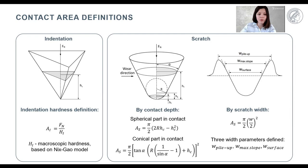This slide presents the contact area definitions used in this study. For the indentation contact area, we use the standard indentation hardness definition based on Oliver and Pharr. For the scratch contact area, we assume a half-circular shape and there are four contact area definitions in total. There is a definition based on the average contact depth, for which there are two expressions depending on whether the spherical or conical part of the tip is in contact. And finally, there are also three definitions for the scratch width commonly adopted in the literature: the width at the distance between the pile-up peaks, the width at the transition to the maximum slope of the groove, and the width at the surface level.